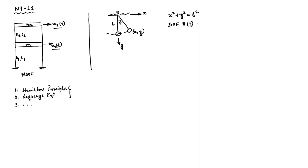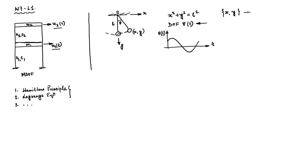We develop the equation of motion in terms of θ(t) and plot the response. We have already derived the equation of motion. We plot the motion θ(t), and if you look at this problem, xy is the coordinate system that defines the space — we call it physical space.